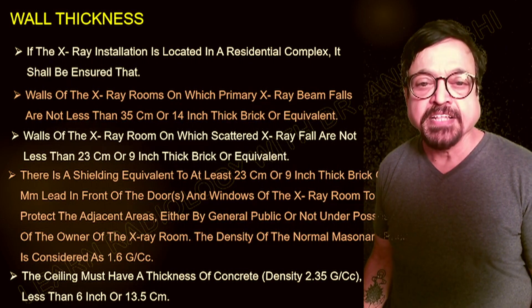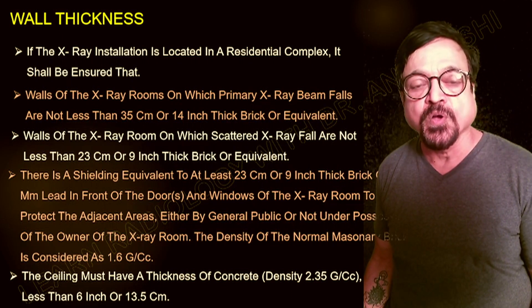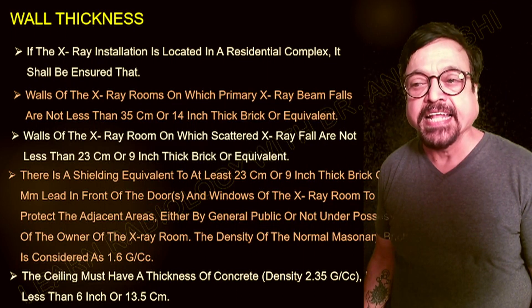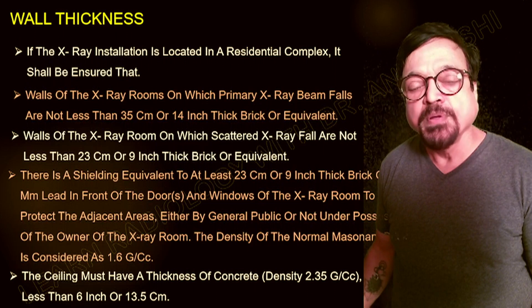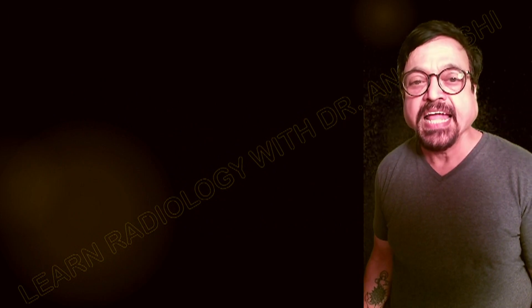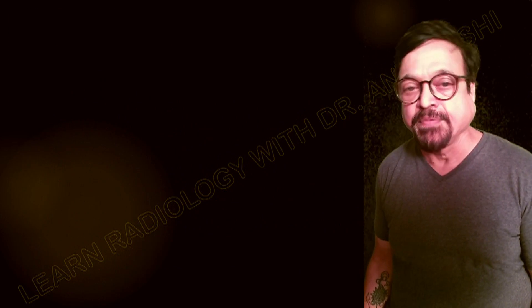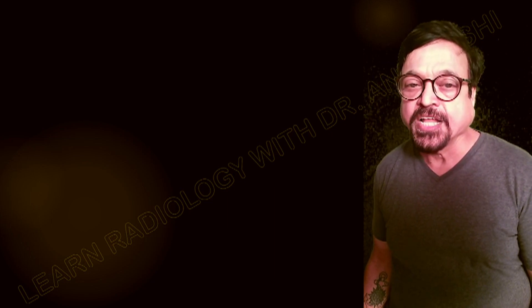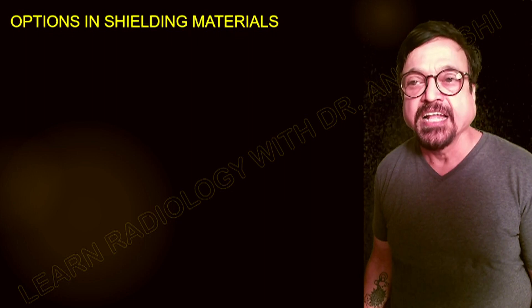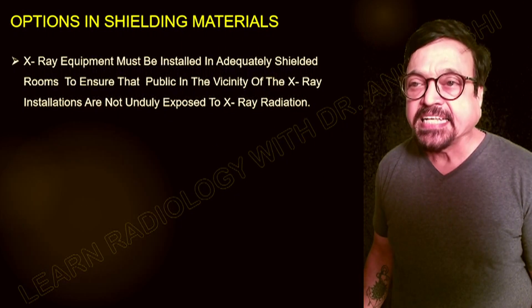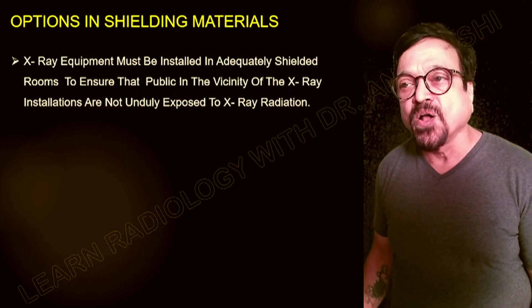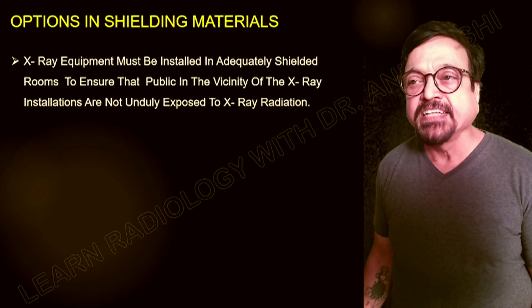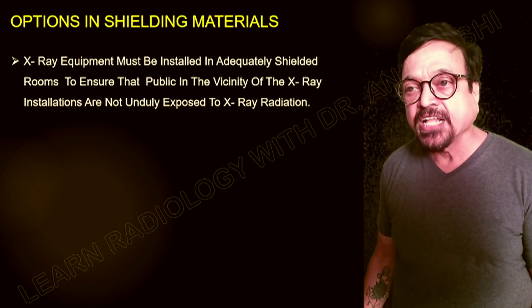The wall thickness depends on whether you are using bricks, concrete, or reinforcing with lead. The ceiling must have a concrete thickness of more than 6 inches. For units not on the ground floor, both the upper and lower concrete slabs have to be 9 inches thick. X-ray equipment must be installed in adequately shielded rooms to ensure that the public in the vicinity of x-ray installations are not unduly exposed to x-ray radiation.